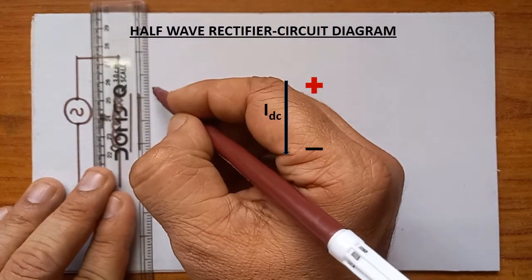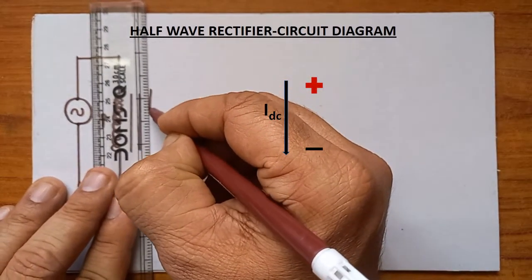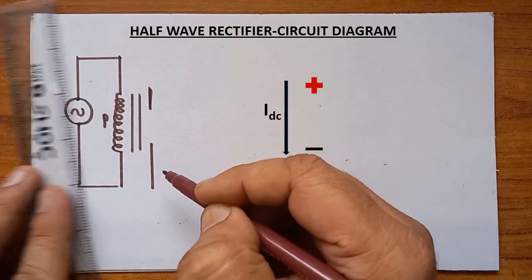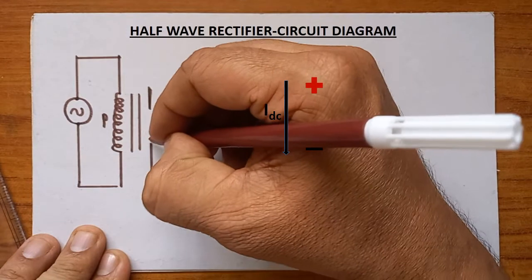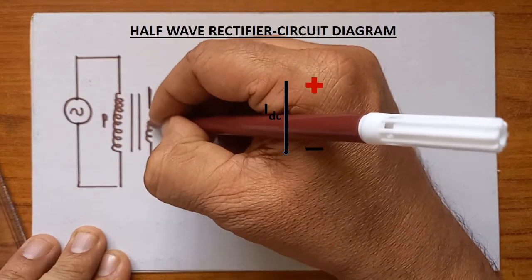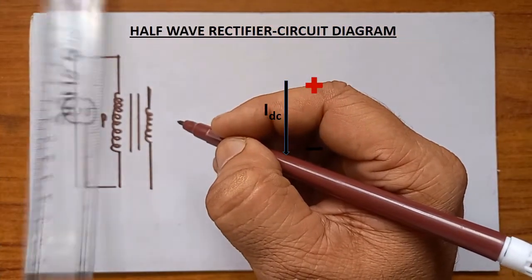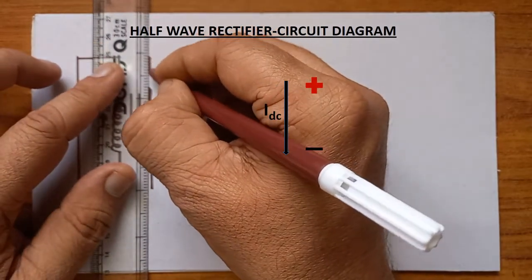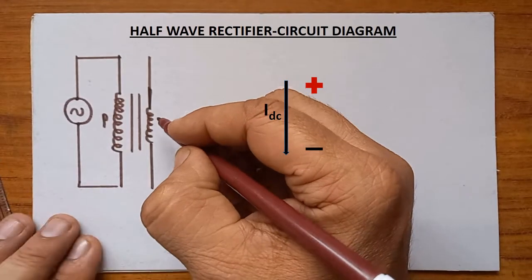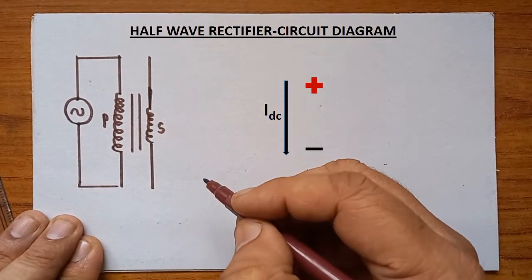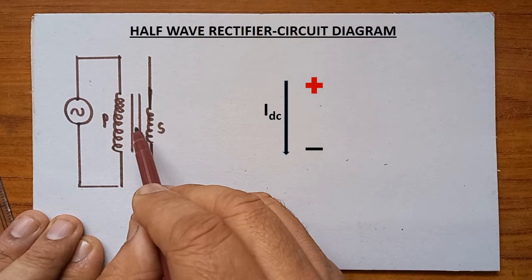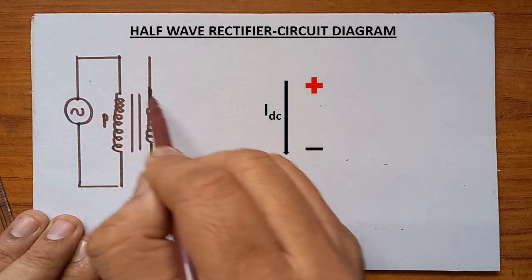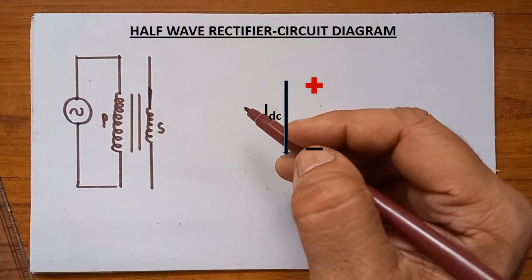Since it is a step-down transformer, we have to draw the secondary now. Compared to the number of turns in the primary, the number of turns in the secondary must be less. This is nothing but the secondary of the transformer. The primary, insulating portion, and then secondary — everything together is called a step-down transformer.